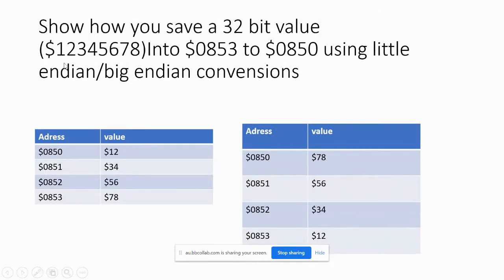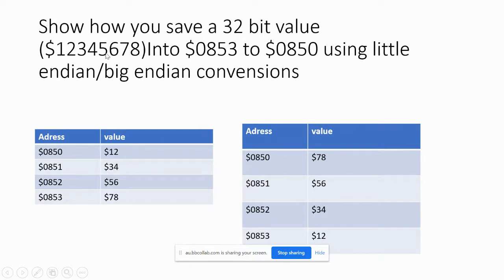For 0x12345678, the most significant byte is 0x12. In little endian, we take the least significant byte 0x78 and place it at the lowest memory address. The next bytes follow in order. The lowest order memory address stores the most significant byte in the big endian case.